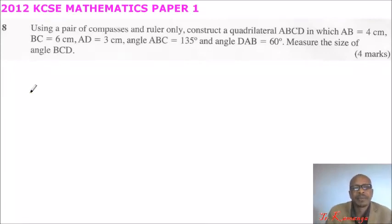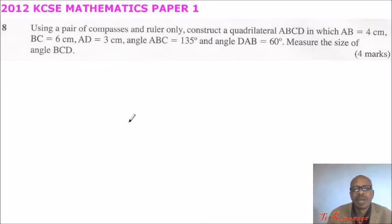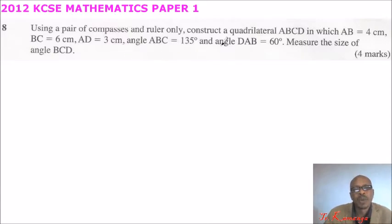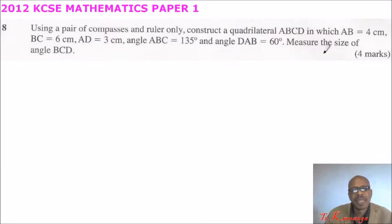This is question number 8, 2012 of KCSE Mathematics Paper 1. Using a pair of compasses and a ruler only, construct a quadrilateral ABCD in which AB equals 4 cm, BC equals 6 cm, AD equals 3 cm, angle ABC is 135 degrees, and angle DAB equals 60 degrees. Measure the size of angle BCD.